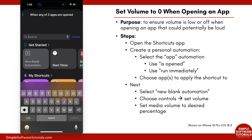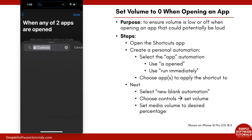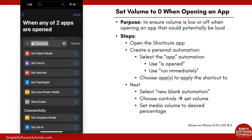Tap on New Blank Automation and then here you can search for actions or scroll through the presets. Tap on Controls, and under Controls you'll find Set Volume — or just type 'volume' into the search and you'll find it. Go ahead and tap on Set Volume.